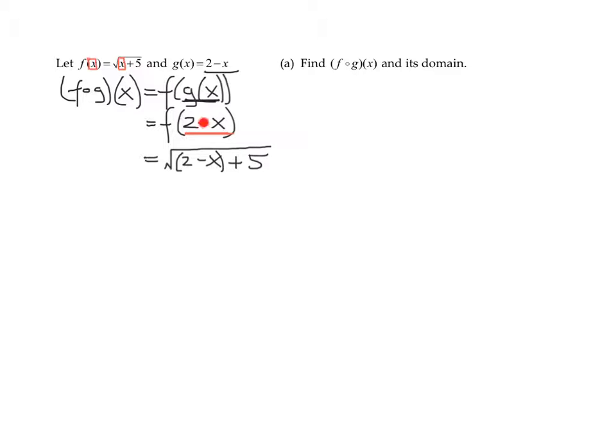So f of 2 minus x is just the square root of 2 minus x plus 5. You can see all I did was that 2 minus x had to go inside the square root. That is the definition of my function. Now I'll simplify it. That is the square root of 7 minus x. So that is the definition of my composition of f composed with g of x.